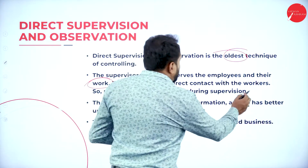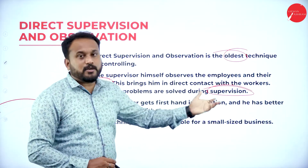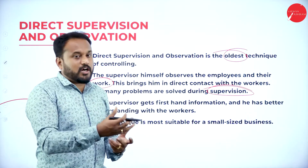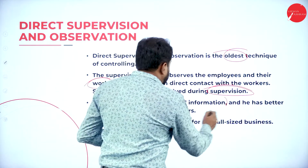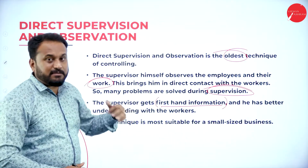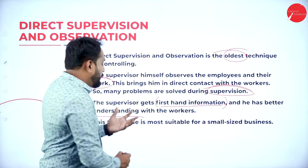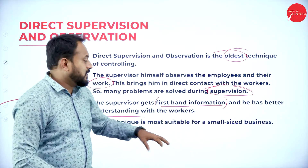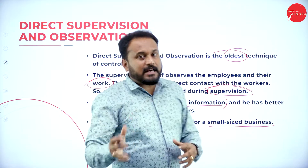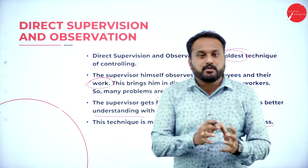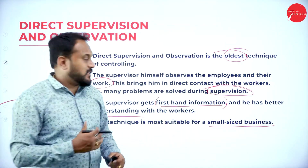The supervisor will check whether the employees are doing their work properly. If not, he will directly call them and tell them what they are doing wrong or right. The supervisor gets first-hand information — he himself understands whether the person is doing it or not — and has a better understanding with the workers. This technique is most suitable for small-size businesses, not large organizations with many employees.